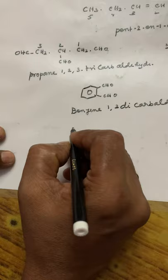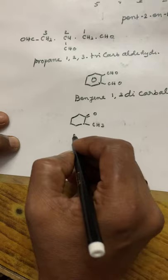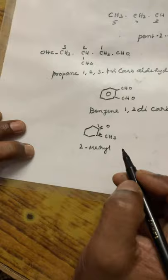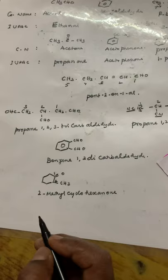What is the IUPAC name of the cyclohexanone compound with a methyl group? The functional group is C=O, and the methyl group is at position 2. So the IUPAC name is 2-methylcyclohexan-1-one. You have learned more about IUPAC naming in standard 11 itself.